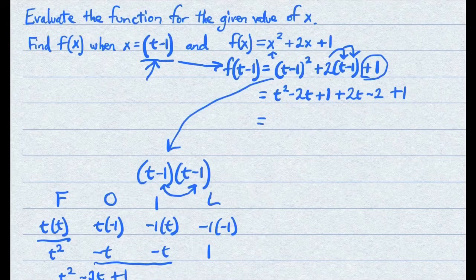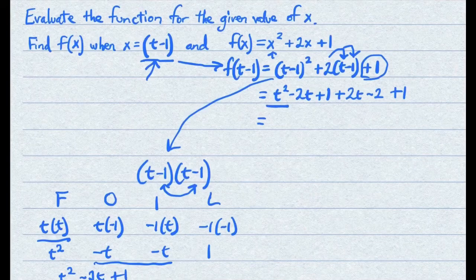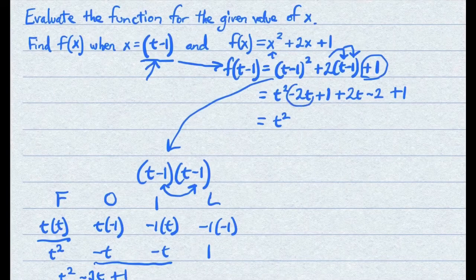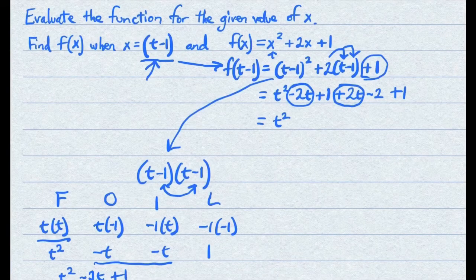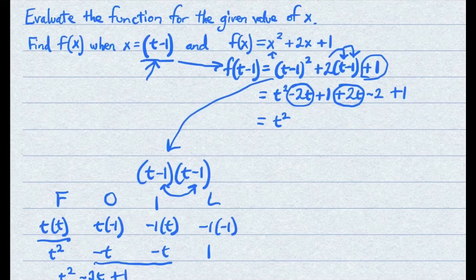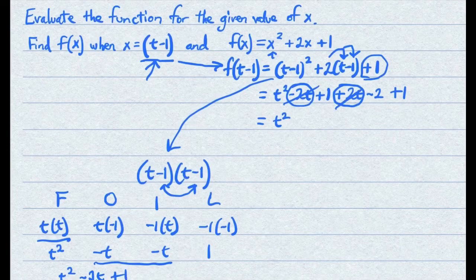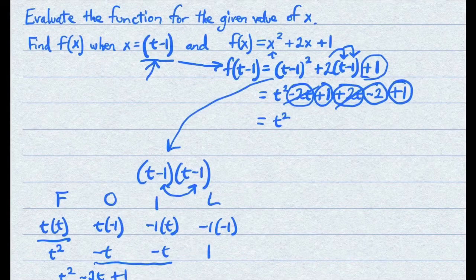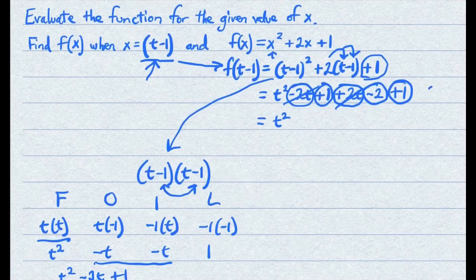So now you're going to combine like terms where you can. There's only one term that's squared. So t squared just comes straight down. Negative 2t can be combined with positive 2t. They cancel each other out. All that's left now are the terms without variables. Positive 1 minus 2 plus 1 also cancel each other out because they're the same as positive 2 minus 2.